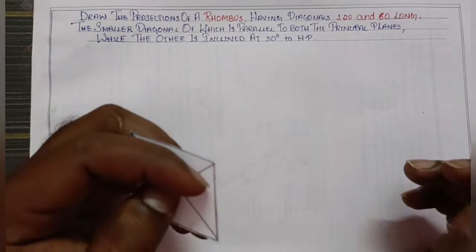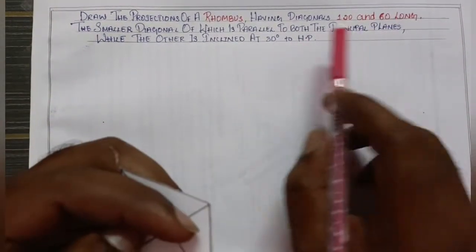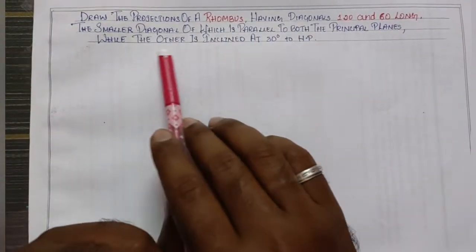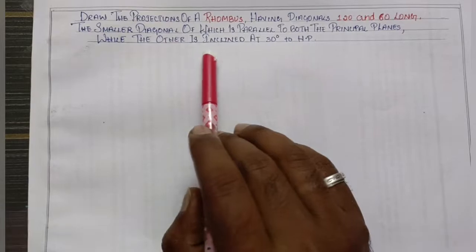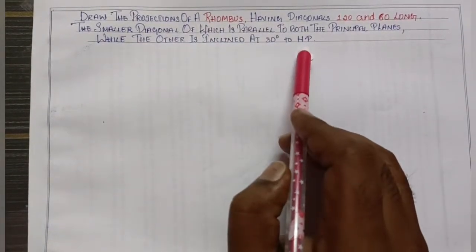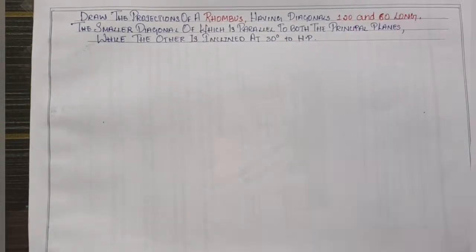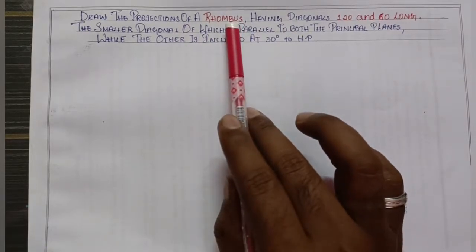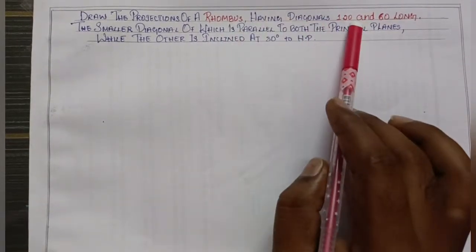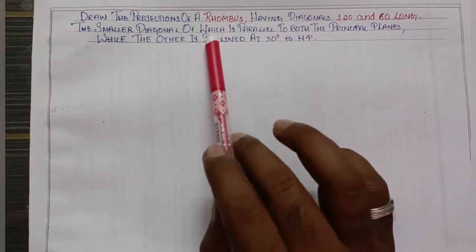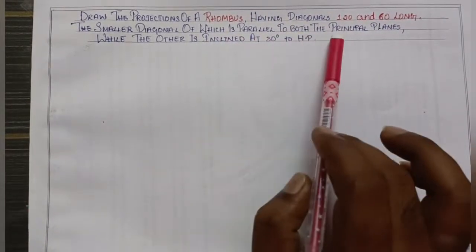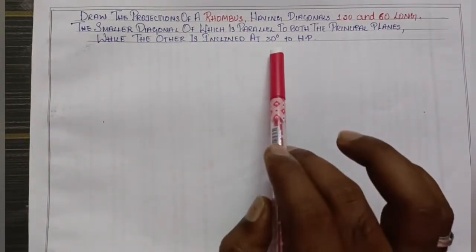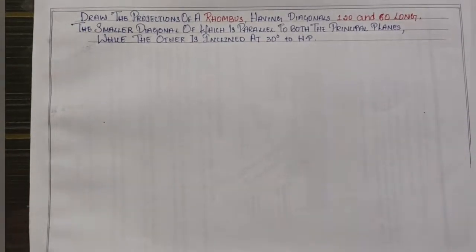Now, the condition: the smaller diagonal of the rhombus is parallel to both the principal planes — that is, the HP and VP. The other diagonal is inclined at 30 degrees to the HP. So those are the two conditions we need to satisfy while drawing the rhombus projections.